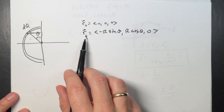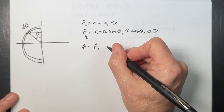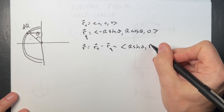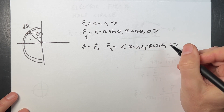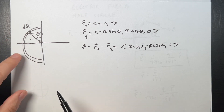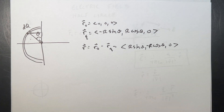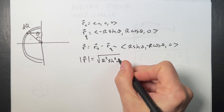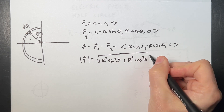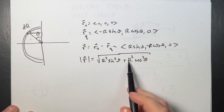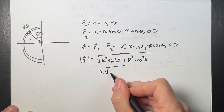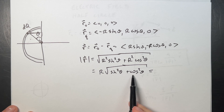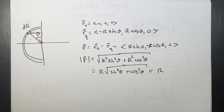Next, find R = R_O − R_Q. Since R_O is zero, this becomes R = (R sinθ, −R cosθ, 0) — pointing with a positive X component and negative Y component. The magnitude of R is √(R² sin²θ + R² cos²θ), which factors to R × √(sin²θ + cos²θ). Since sin²θ + cos²θ = 1, the magnitude is simply R.